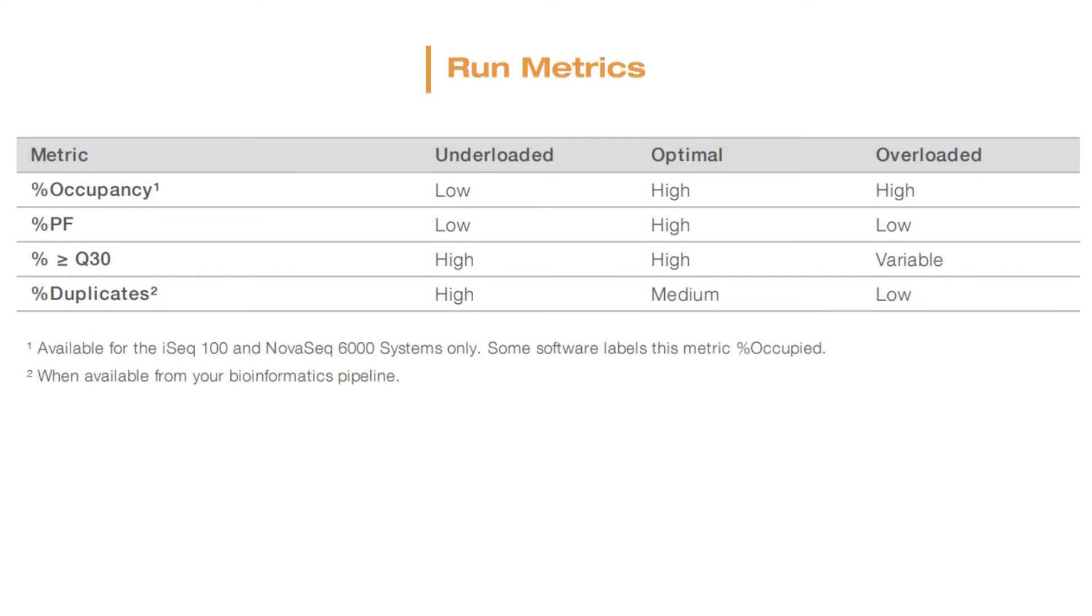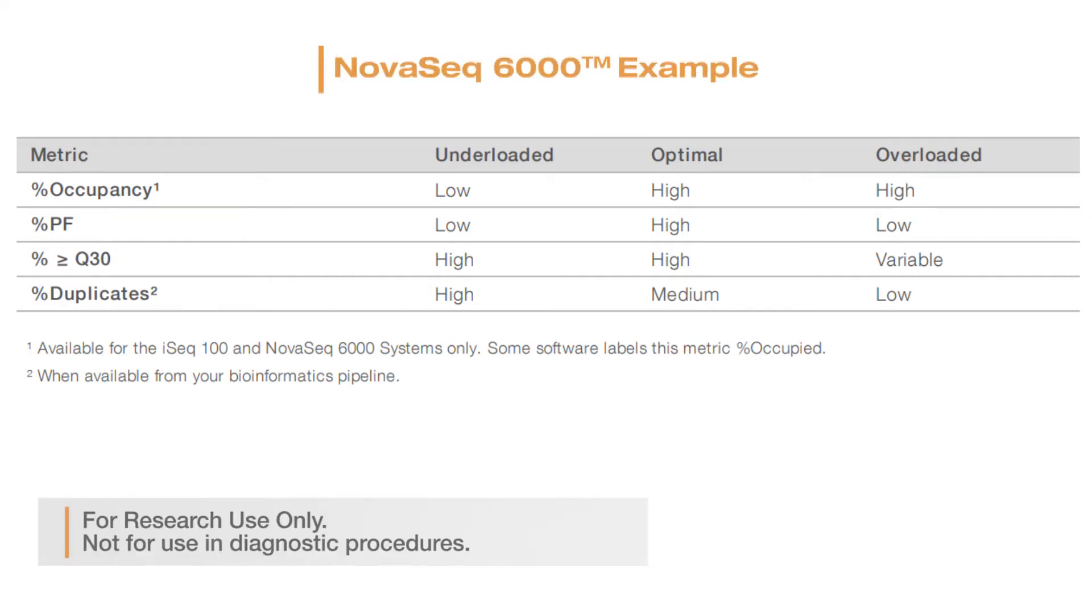While the specific ranges for these metrics do vary by instrument type, here's an example for a NovaSeq. If optimal cluster density generally produces 85 percent occupancy, 75 percent passing filter, and 80 percent greater than Q30, then a run that shows an increase to 98 percent occupancy, a drop to 70 percent passing filter, and to 55 percent greater than Q30, would suggest the run was overloaded.